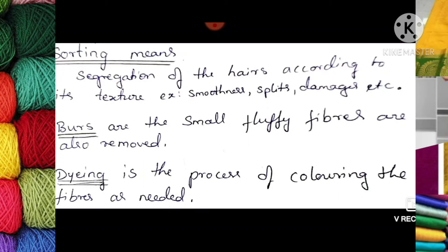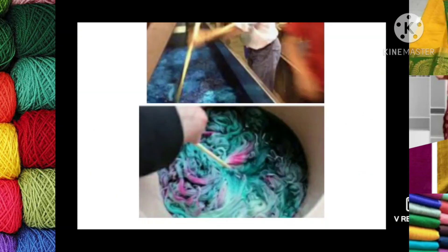Next comes the dyeing process, which is a process of coloring the fibers as needed. When we need different colors of cloth, we do the same dyeing process to make the cloth colorful. Dyeing means the coloring of wool, which takes place both at large scale and small scale where the required color dye is applied. The dye is a liquid used to color the raw wool after it has been cleaned.